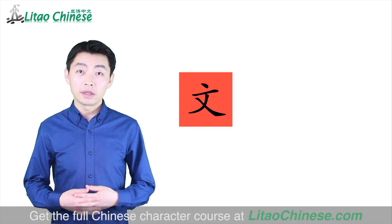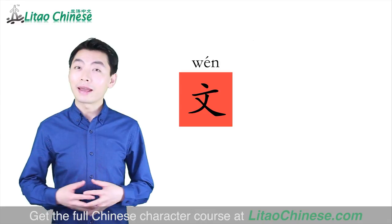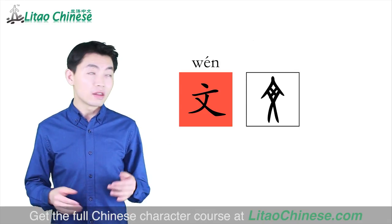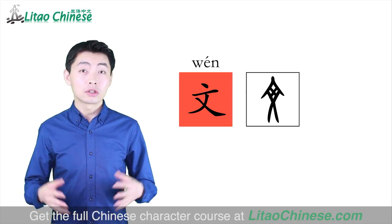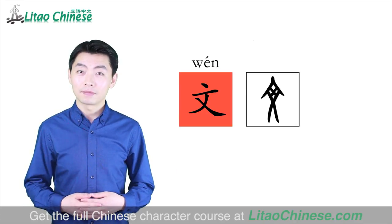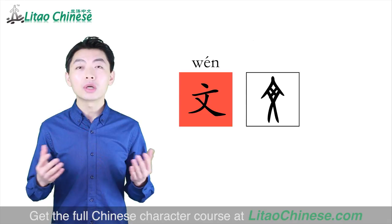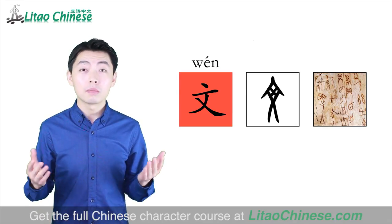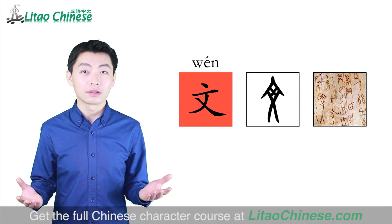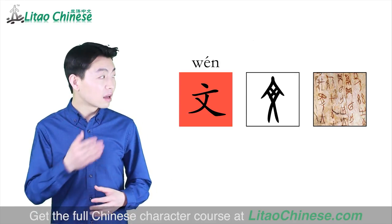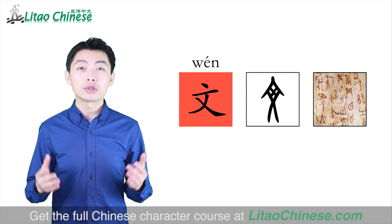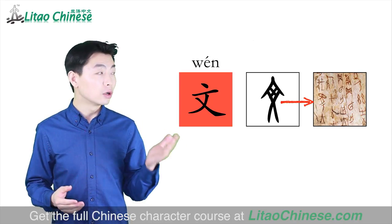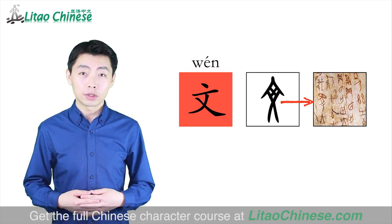This character is Wen. Its ancient written form is like this. You can see there are several lines crossing each other in it. Actually, if we look at all the ancient Chinese characters, they are all made by putting different lines together. So the character Wen is used to call this whole writing system, and it also refers to language.